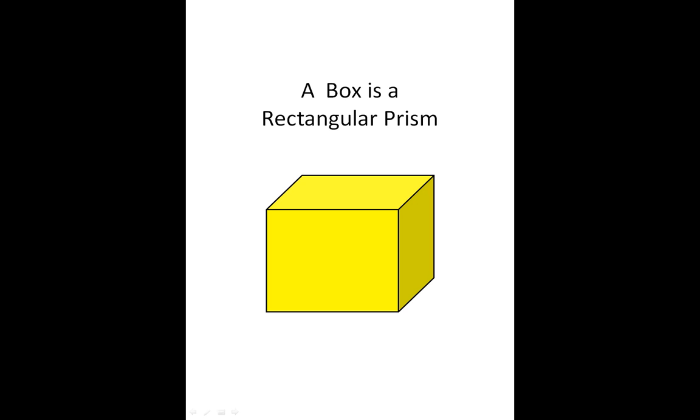A common rectangular prism that we use every day in our home and in the workplace is a box. So a box is a hexahedron.